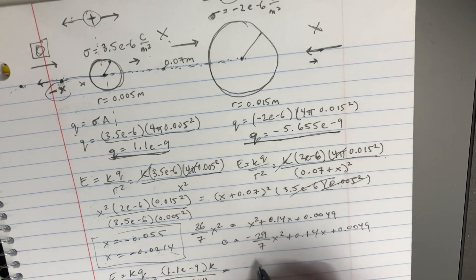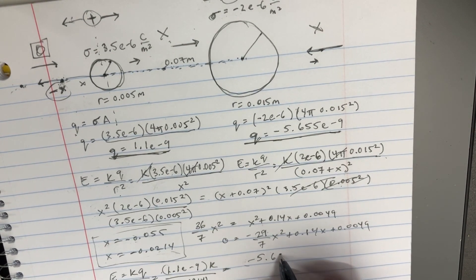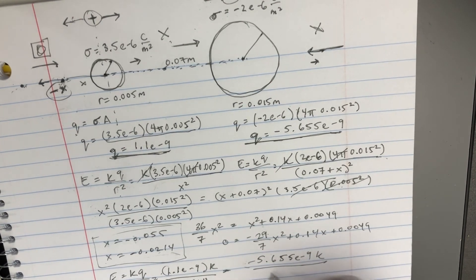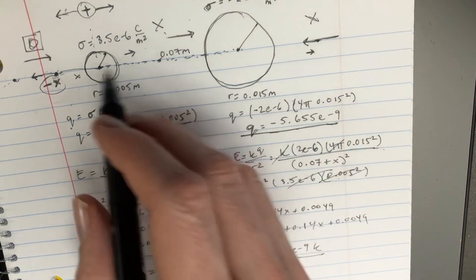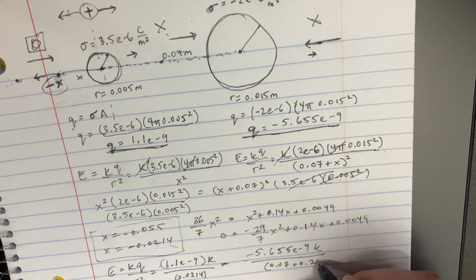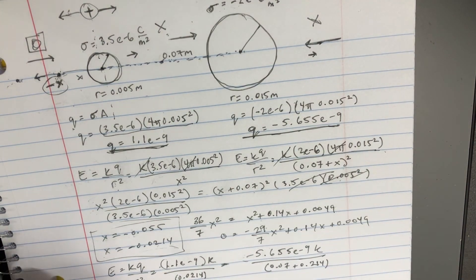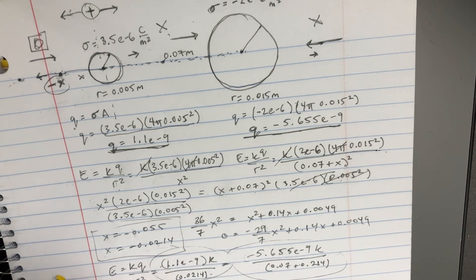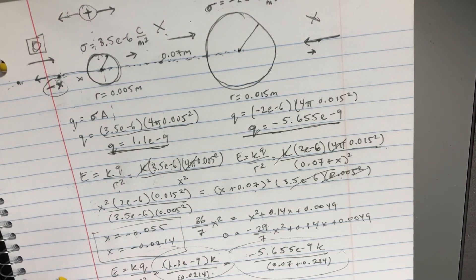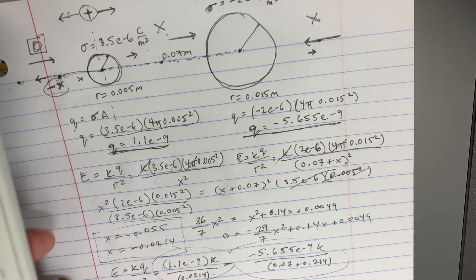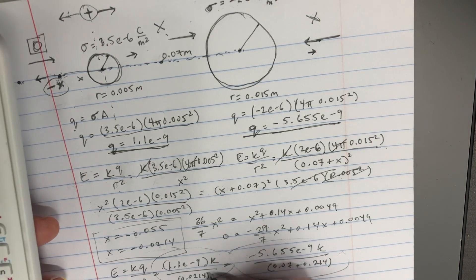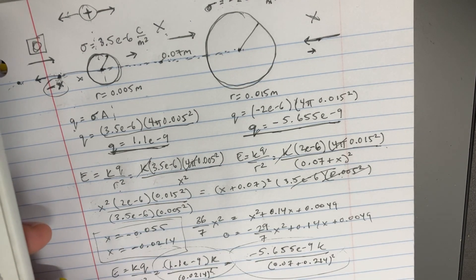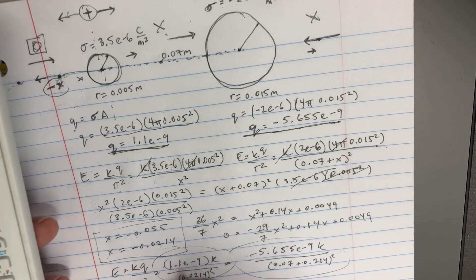Because we want that to be equal to negative 5.655 e to negative 9. Here's the k over, here we're going to put 0.07 plus 0.0214. We're just going to see if this is correct. Does this negative charge equal that? Does this positive charge equal that negative charge? Let's see. So, 1.1 e to negative 9 times 9 e to 9. Divide that by, and this is supposed to be squared, 0.0214 squared. This is positive 2.